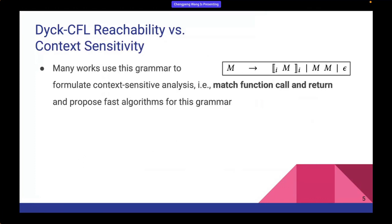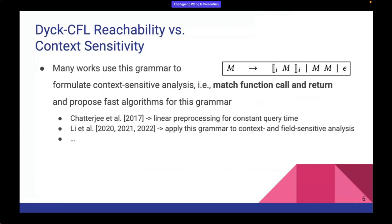Many works use this grammar to formulate context sensitivity, because matched parentheses can exactly represent corresponding function calls and returns, just like left and right parentheses. Typical works include Strauss's work utilizing linear pre-processing time and space to support constant query time, and the LEES work also uses this grammar to formulate context and field sensitivity. We appreciate these works because they have greatly pushed forward the study of CFL reachability.